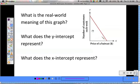What this graph means is, is the price of the haircut going up or down this way? It's going up this way. And as the price of the haircut increases, what is happening to the number of customers? You should notice that as the price of the haircut increases, the number of customers decrease. That is one way we could explain the real world meaning of the graph.